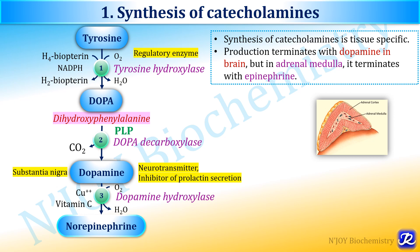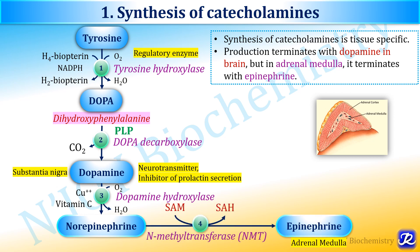This reaction requires copper as well as vitamin C, that is ascorbic acid. Further, from norepinephrine, epinephrine is formed by transfer of a methyl group to norepinephrine by the active methyl donor S-adenosylmethionine, and this reaction is catalyzed by the enzyme N-methyltransferase. In this process, S-adenosylhomocysteine is formed. Thus, in the adrenal medulla, norepinephrine and epinephrine are formed.